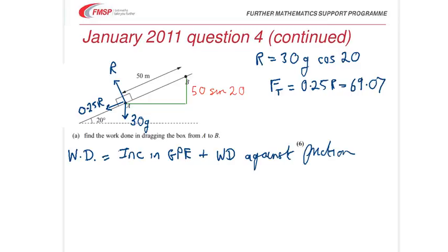So, the second thing we need to note here is that the increase in height is here. And, just by simple trigonometry, that distance, because the hypotenuse is 50, H is 50 sine 20. So, the increase in gravitational potential energy is 30 times 9.8 times 50 sine 20. Plus the work done against friction is 69.07 times the distance that the object was dragged, with friction acting against it. So, that was 50, 50 meters.